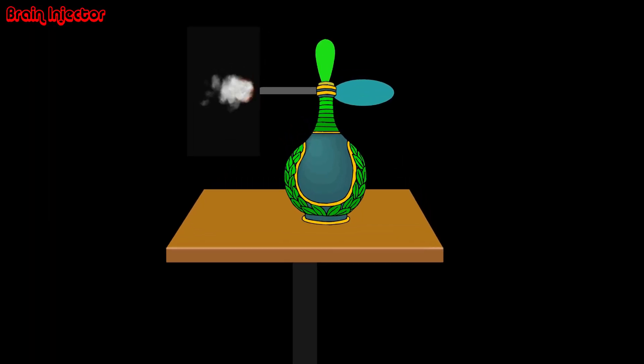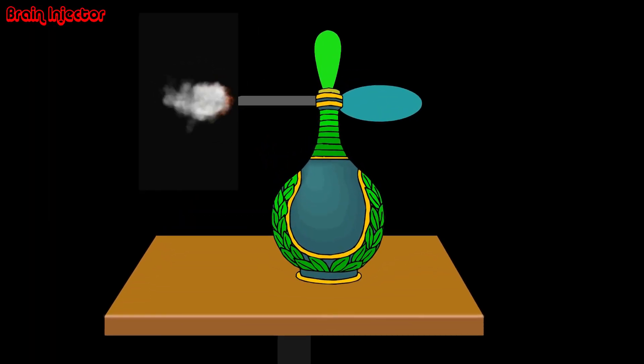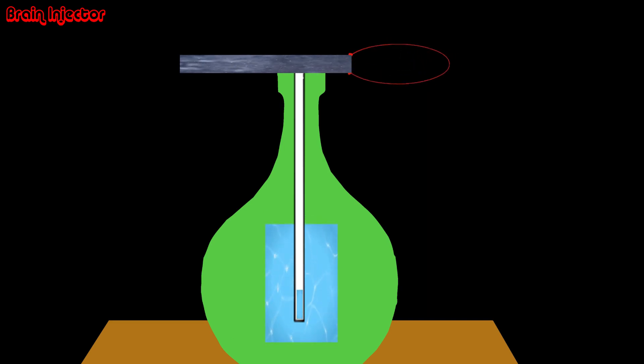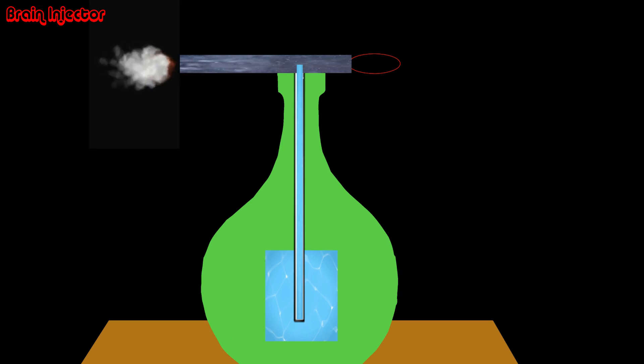Similarly, the same Bernoulli's principle helps in the designing of the perfume bottles. When the rubber bulb is squeezed, the air flows through the fine tube increases, which in turn reduces the pressure at the nozzle below atmospheric pressure. Thus, due to the difference in pressure and with the stream of air coming out of the nozzle, it blows the liquid into a fine spray.